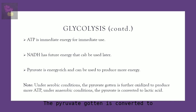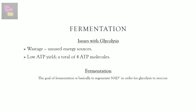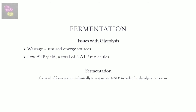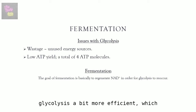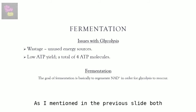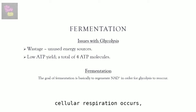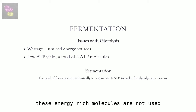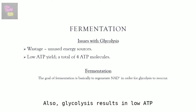Under aerobic conditions, pyruvate is further oxidized to produce more ATP. Under anaerobic conditions, pyruvate is converted to lactic acid through fermentation. Some organisms perform only glycolysis, while others perform glycolysis and fermentation. Fermentation makes glycolysis more efficient, as glycolysis alone is very inefficient. Without cellular respiration, the energy-rich NADH and pyruvate molecules go to waste, and the ATP yield from glycolysis alone is very low — only four ATP molecules total.